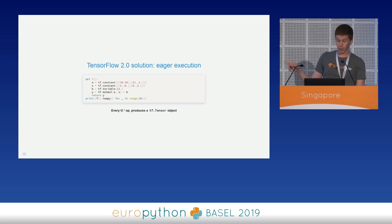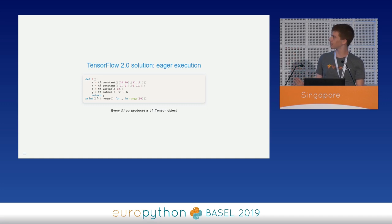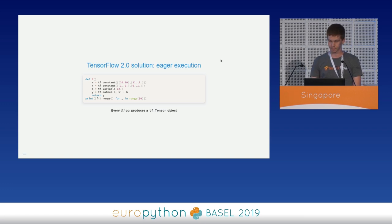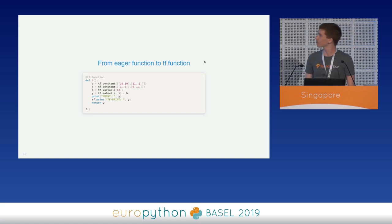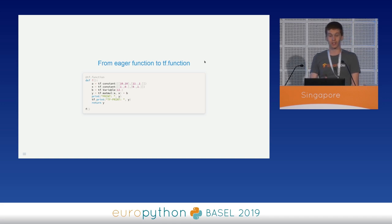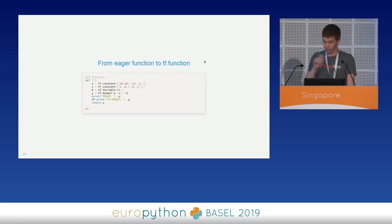We can call the function as many times as we want and it works like any other Python function. Right now we have only a pure eager function. But what happens if we try to decorate this function and convert it to its graph representation using TF function? Adding the decorator is pretty straightforward. We might expect that since this function worked correctly in eager mode, we can convert it to its graph representation just by adding the decorator. Let's see what happens.